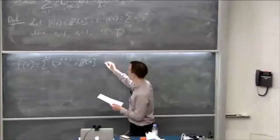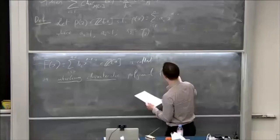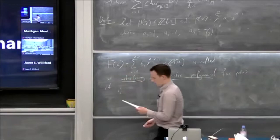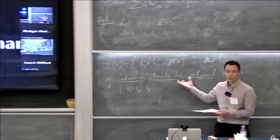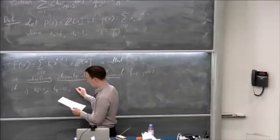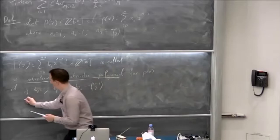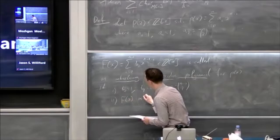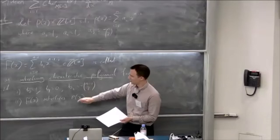This integer polynomial is called an interlacing characteristic polynomial for p(x) if the following hold: first, this polynomial should also be monic, and we also want to think of it as the characteristic polynomial of a Seidel matrix, so the first three coefficients follow the same pattern. The second condition is that f(x) interlaces p(x), since we're thinking of it as the characteristic polynomial of a principal submatrix of a Seidel matrix.